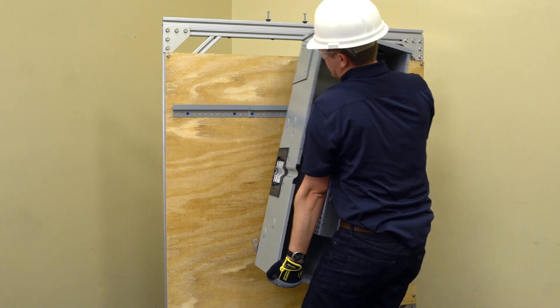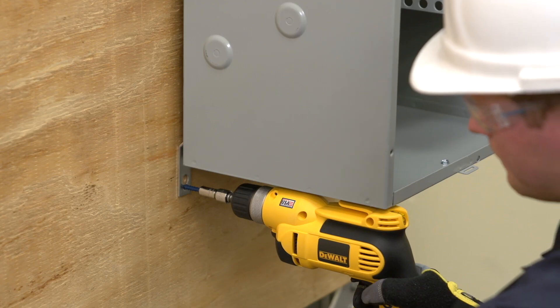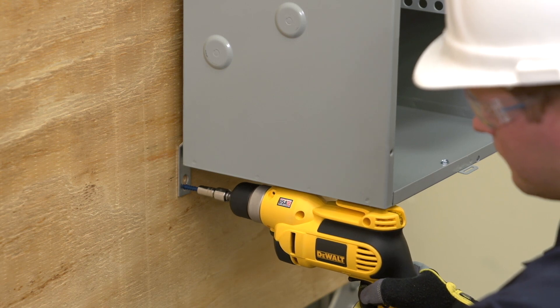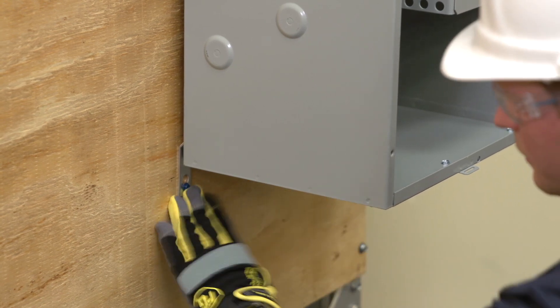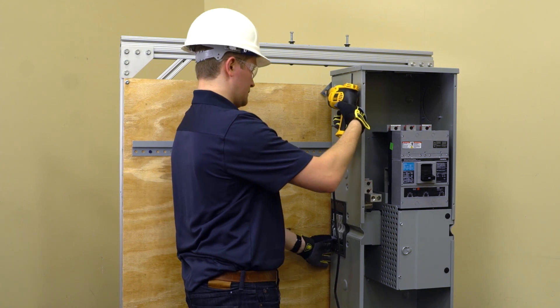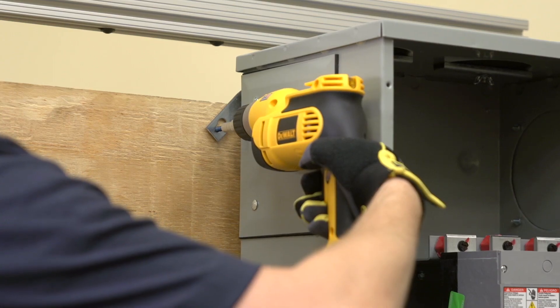Mount the unit onto the alignment rail on the wall. The quick roll feature allows you to easily roll the unit to the appropriate position. Use screws to fasten the unit to the wall. You can use either the mounting holes along the back wall, the mounting tabs on the outside of the unit, or a combination of both.